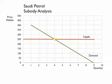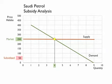At this equilibrium, the market price would be 250 halalas, and the quantity demanded would be 4 liters per week. The question is: if the government wanted to reduce the price of petrol down to 50 halalas, what would it cost in terms of the subsidy?